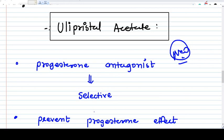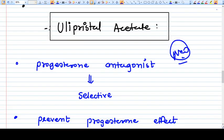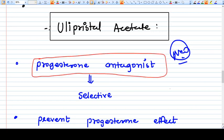Hello everyone, in this video we're going to talk about ulipristal acetate, a different drug. It is a progesterone antagonist. Which other drug is a progesterone antagonist? Can you imagine?